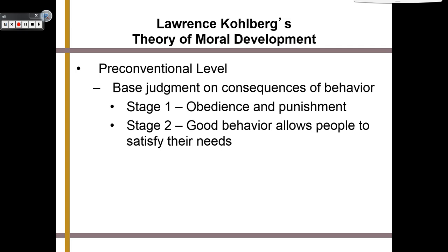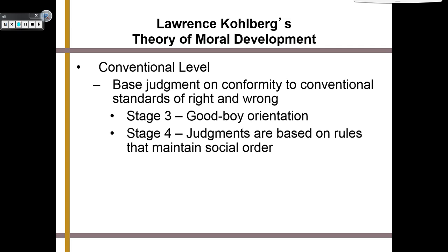At the conventional level, we base our judgment on conformity to conventional standards of right and wrong. At stage three of this level, it's about the good boy orientation — you want people to like you and think you're a good person. At stage four, judgments are based on rules that maintain social order — you're going to decide that this is the right or wrong thing to do because that's the law, that's what it says to do.